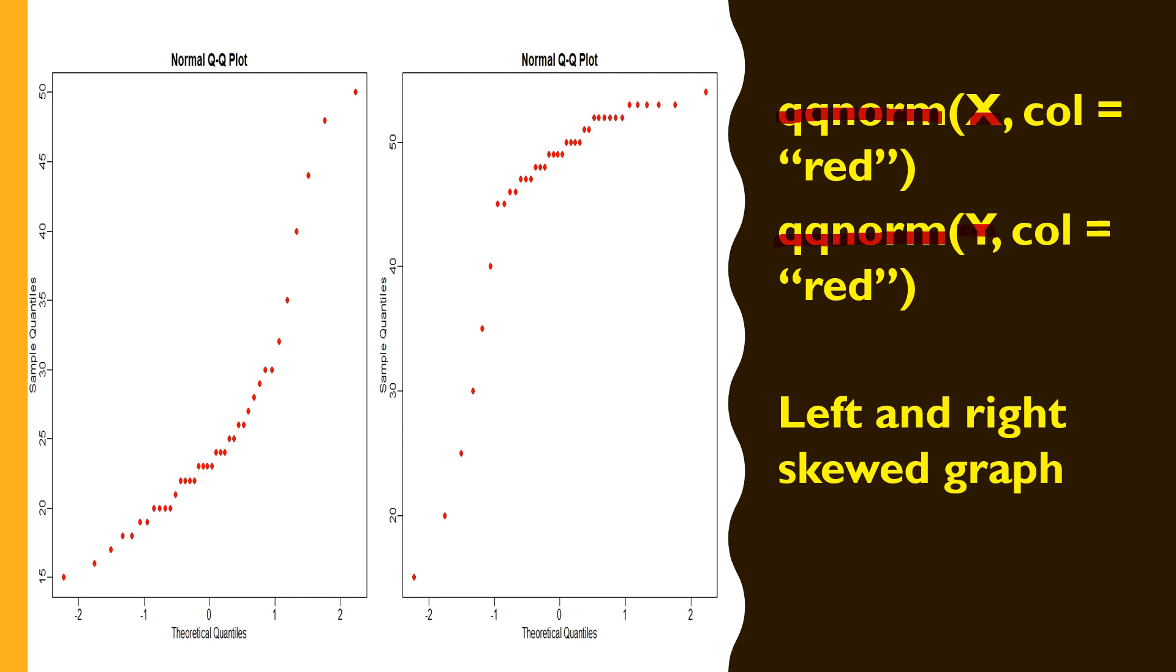Two different graphs, two different Q-Q plots, have been plotted with qqnorm. Also we have used col to change the color of the plot. It's red in the graph. Also the graphs are left and right skewed, which we're going to discuss later.